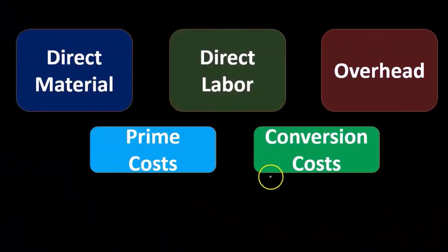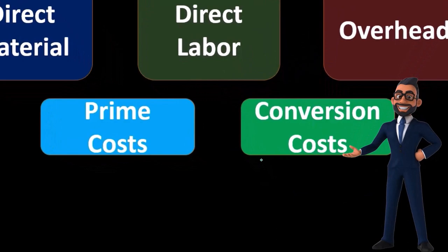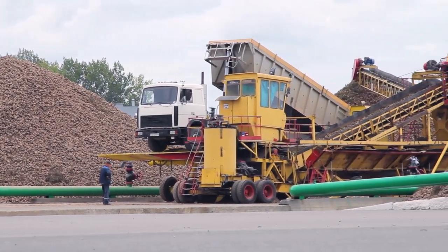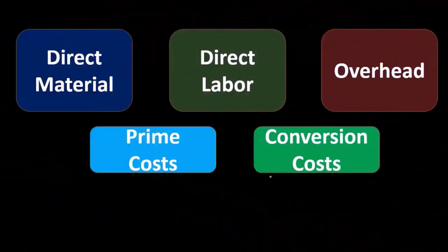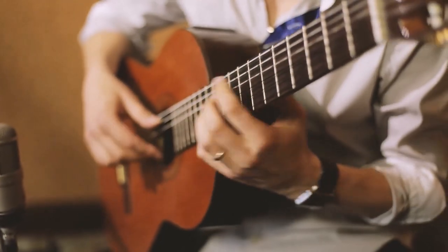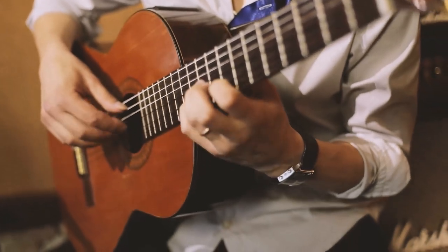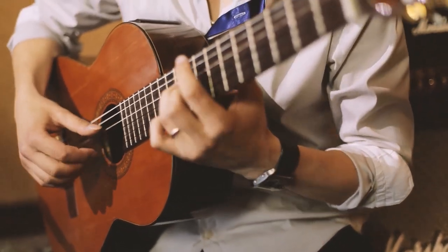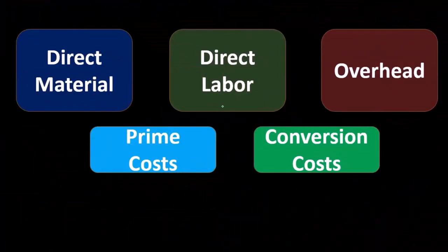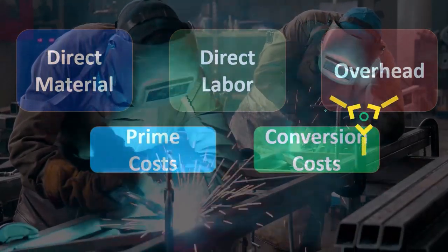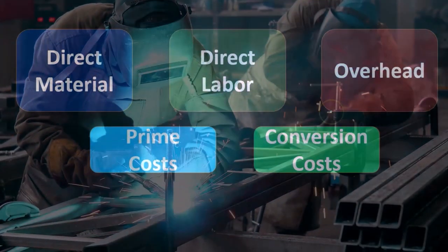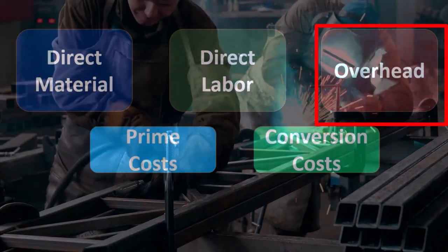That differentiates from conversion costs, although there are some overlaps. Conversion costs are the costs used to convert the raw material to the finished goods — the costs that mean we're doing something to the raw material. In the example of a guitar, the direct material would be something like the wood, and the conversion would be anything we do to that in order to make it into a guitar. So conversion costs include direct labor and overhead, because the direct labor is part of us processing it, and the overhead covers anything in the factory that we need in order to convert.